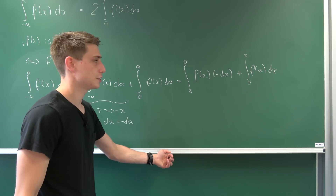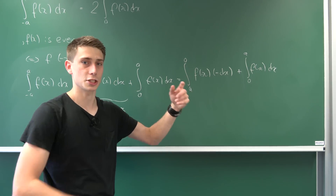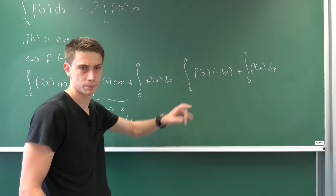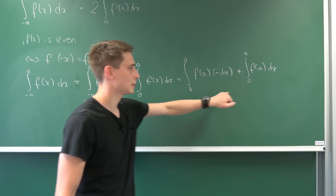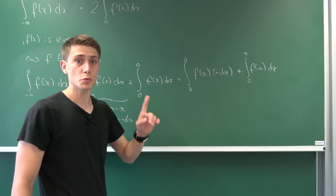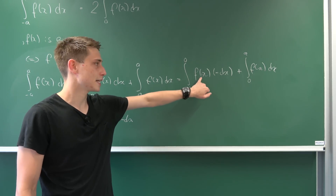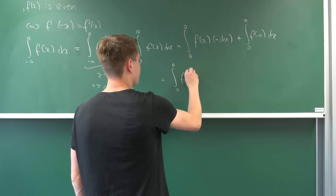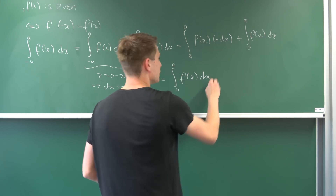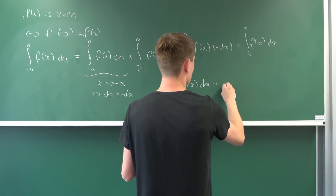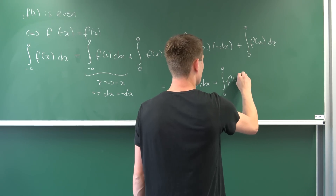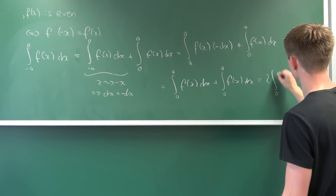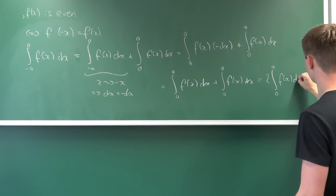Now we can use a nice property of integrals: we can distribute this minus sign and change the order of the upper and lower bounds. So then the integrals go from zero to a. That's nice, because then we have the same upper and lower bounds and we can add them together. Also we can use the property that our function is indeed even — that means f of minus x is just f of x. Now we have the integral going from zero to a of f of x dx, and we are going to add the very same integral to it, giving us two times the integral going from zero to a of f of x dx.